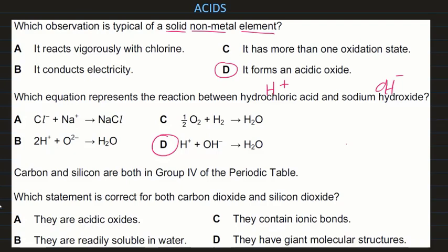Carbon and silicon are both in group four of the periodic table. Which statement is correct for both carbon dioxide (CO₂) and silicon dioxide (SiO₂)? They are acidic oxides — yes. They are readily soluble in water — no, carbon dioxide is soluble but silicon dioxide is insoluble. They contain ionic bonds — no, carbon, silicon, and oxygen are all non-metals, so they can only form covalent bonds.